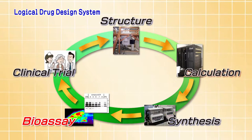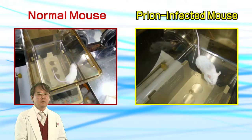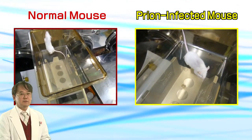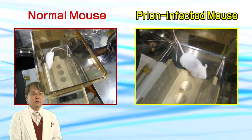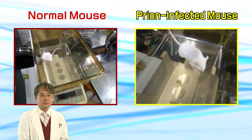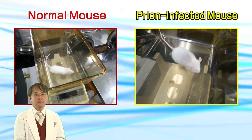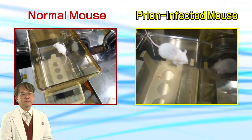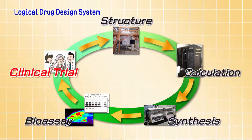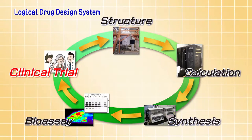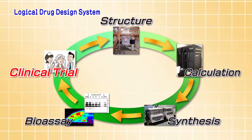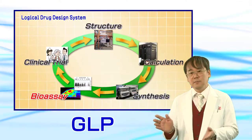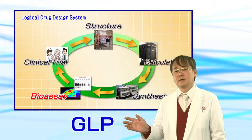Fourth is the administration of the prepared compound to disease model cells and model animals, to examine the efficiencies. Then we will start the non-clinical safety examinations based on GLP standards.